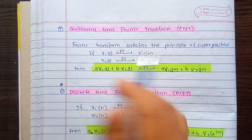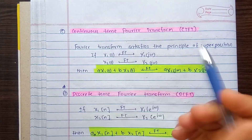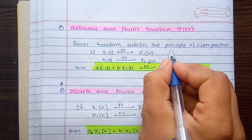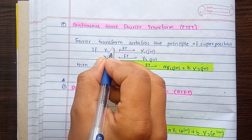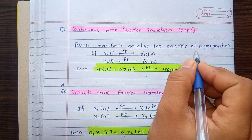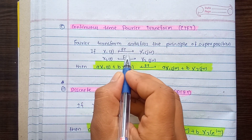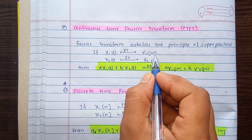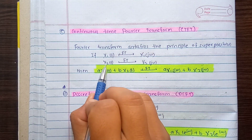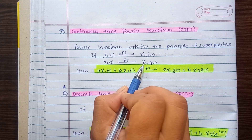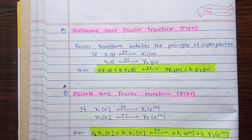The Fourier Transform also has a linearity property. For the continuous time Fourier Transform (CTFT), we need to satisfy the principle of superposition. If X1t is the input signal, its Fourier Transform is X1(jω). If X2t is the input signal, its Fourier Transform is X2(jω). This is a linear signal.